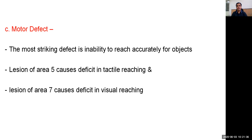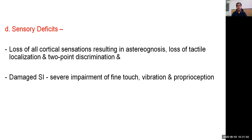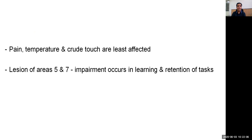Motor defects include inability to reach accurately for objects — lesion of area 5 causes deficiency in tactile reaching, while lesion of area 7 causes deficiency in visual reaching. Sensory deficiencies include loss of all cortical sensation resulting in astereognosis, loss of tactile localization, and loss of two-point discrimination. Damage to somatosensory area 1 causes severe impairment of fine touch, vibration, and proprioception, while pain, temperature, and crude touch are less affected.